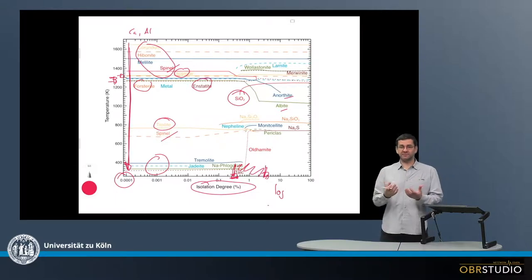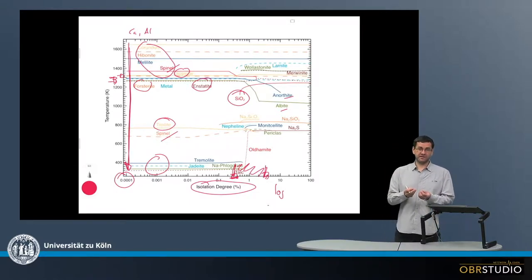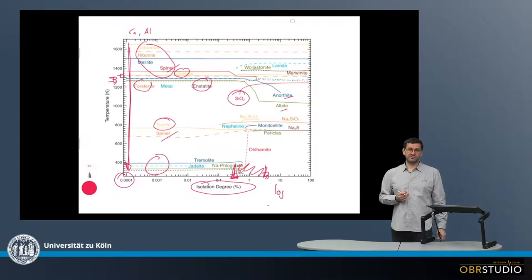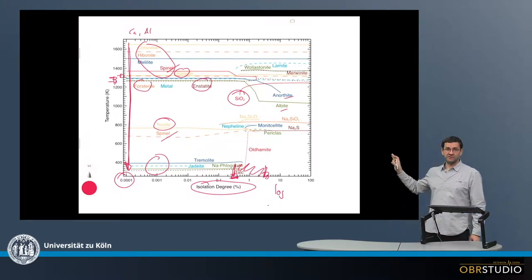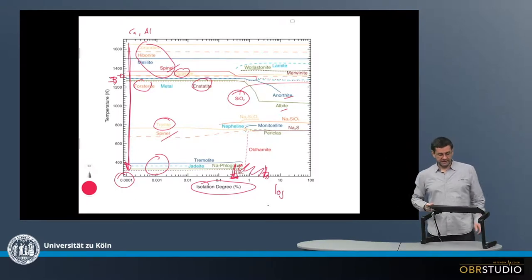But there's also chondrules that have silica in them as silica together with pyroxene, no olivine. And these also must have formed from fractional condensation and then there may be remelted or something like this. So we see direct evidence for this kind of fractional condensation and it's then very good to see that this can also be reproduced in this model here.